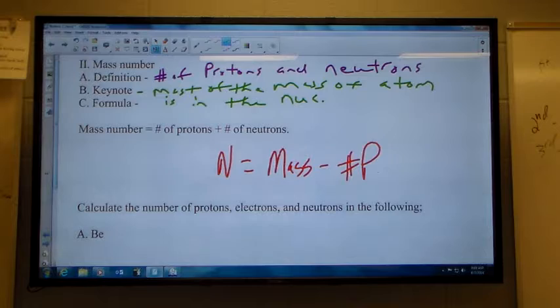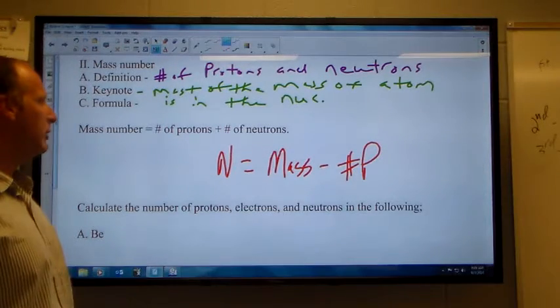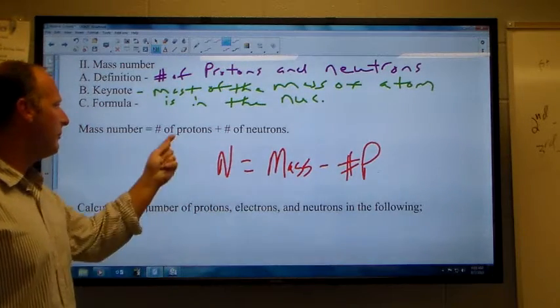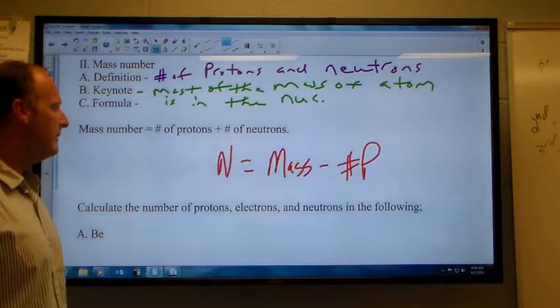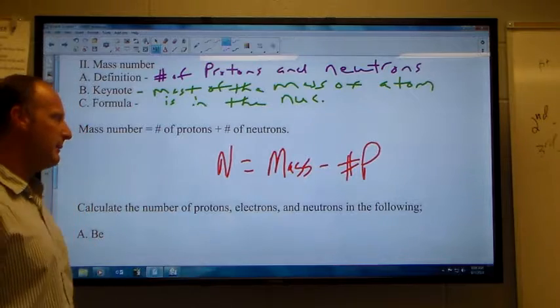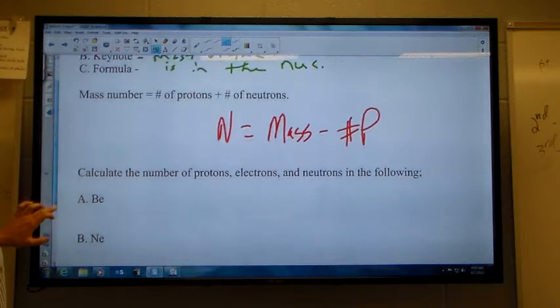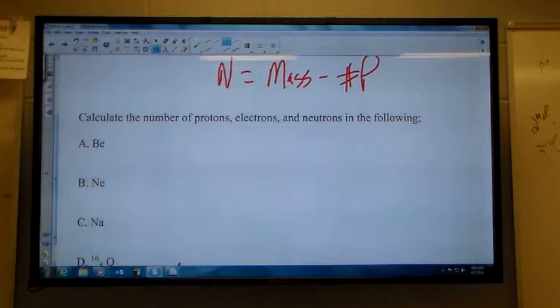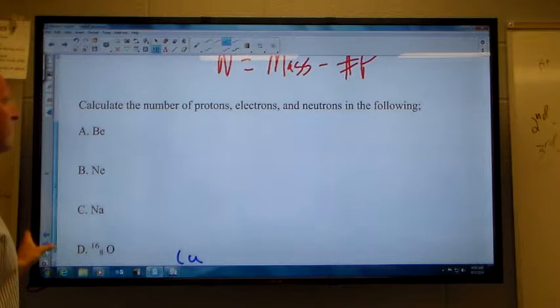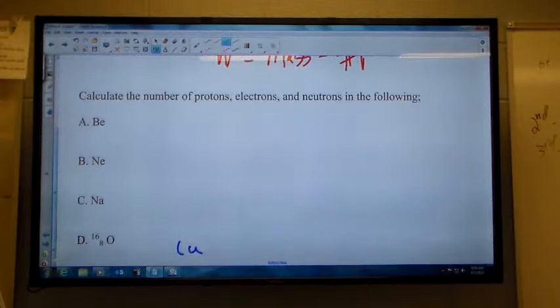If the formula for the mass number is the count of protons and neutrons in the nucleus, if I can find the number of protons by the atomic number, and the mass number is always given, then I would find the number of neutrons by taking the mass number minus the atomic number. In simpler terms, I take the big minus small.